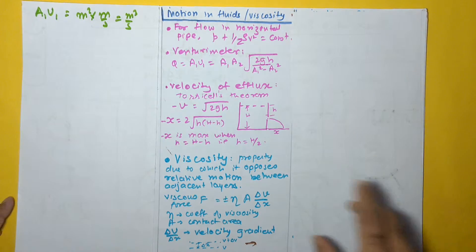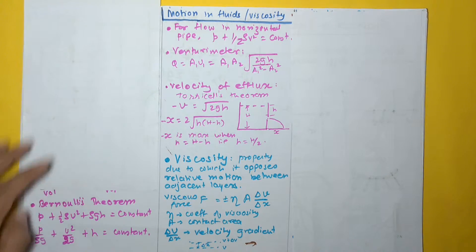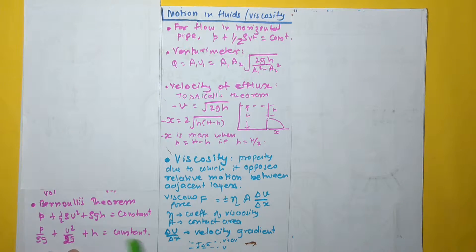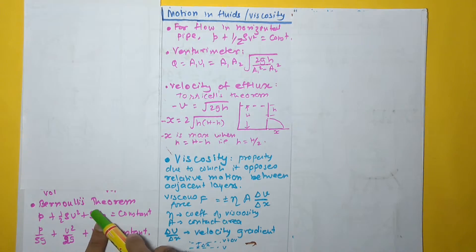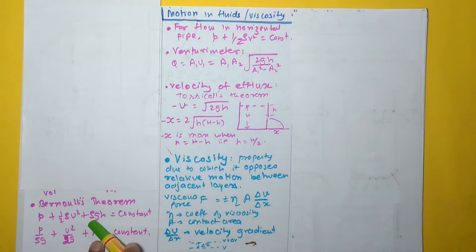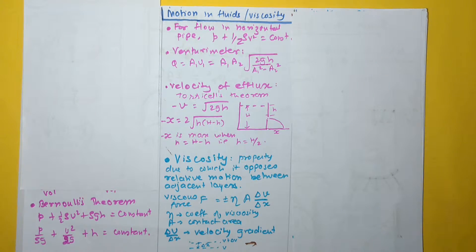Continuing with Bernoulli's theorem: if the pipe is horizontal, h is constant at all locations, so the ρgh term drops out, and we get P + ½ρv² = constant for a horizontal pipe.